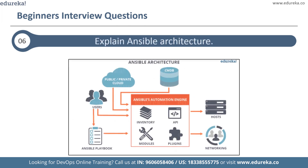The next question is: explain the Ansible architecture. The interviewer wants to know all the components present in the architecture. You can refer to the diagram on screen. The main component is the Ansible automation engine, which directly interacts with various cloud services, configuration management databases, and users who write playbooks to execute the engine.